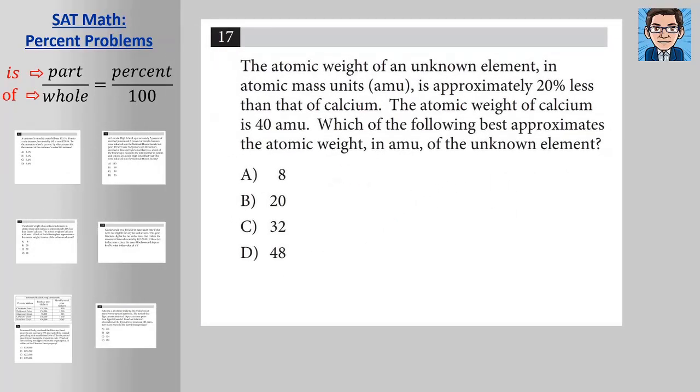All right. In this problem, again, it's very wordy, but let's just pick out the information, which is we have approximately 20% less than calcium and calcium is 40. So we're just basically trying to find 20% less than 40. So a couple of different ways we could do it. We could do 40 times 0.2 is 8. 0.2 is the 20% and then go 40 minus 8 and get 32. So that 8 represents 20% of 40. It's 20% less. So we go 40 minus 8 or 32. The other way you could do it is that it was 20% less. That means that it's 80%. So we can do 80% times 40 and get 32 as well.